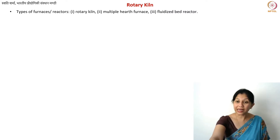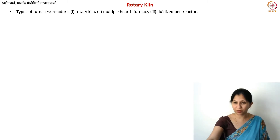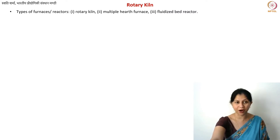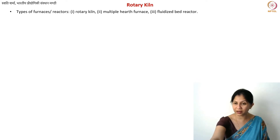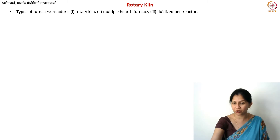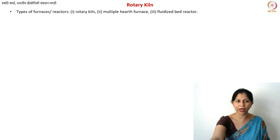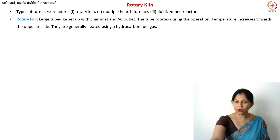The rotary kiln is the first type of furnace I'm going to talk about. This is the one most commonly used for activation of carbons. There are two other types we will discuss: the multiple hearth furnace and the fluidized bed furnace, also called a reactor.